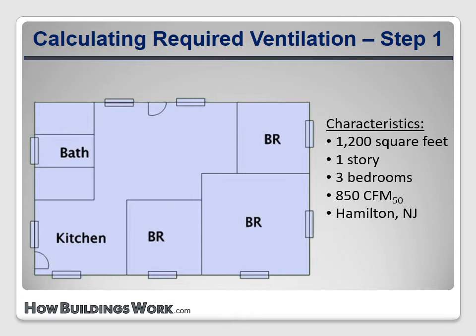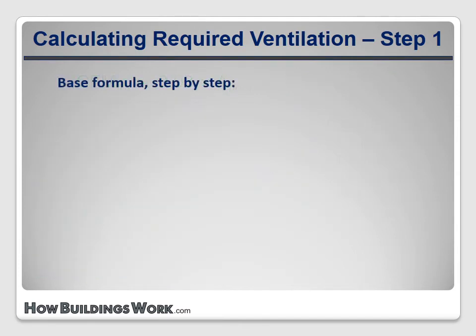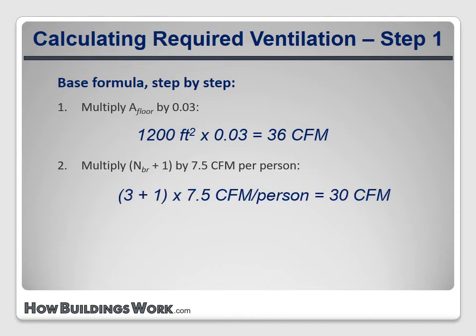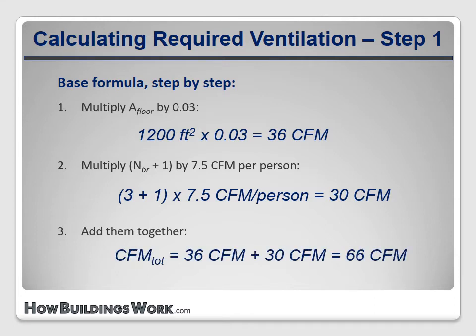Our first step is to plug the information into the formula for the total desired ventilation rate. The first part of the equation deals with the floor area, so we multiply 1200 square feet by 0.03, giving us 36 CFM. The second part deals with the number of occupants: we multiply three bedrooms plus one — four potential occupants — by 7.5, giving us 30 CFM. So we need 36 plus 30 for a total of 66 CFM of desired ventilation.